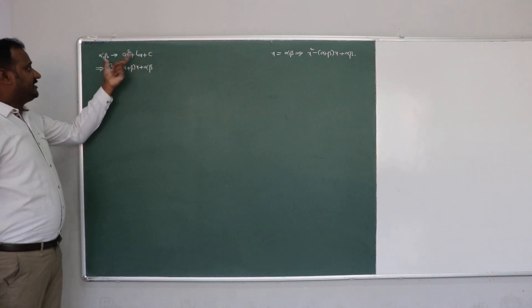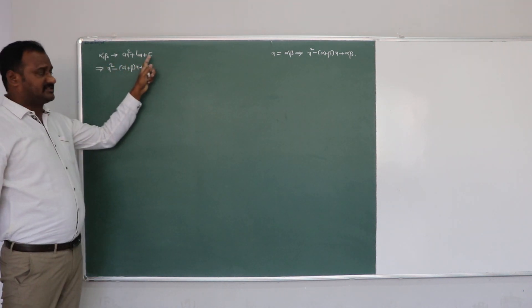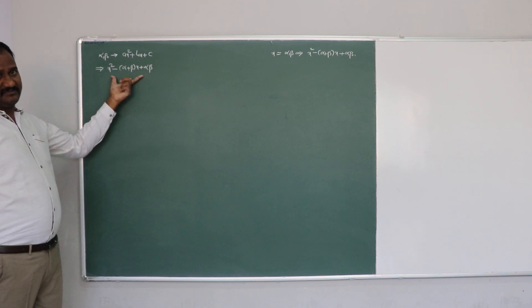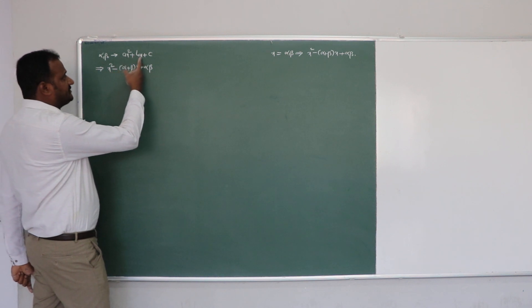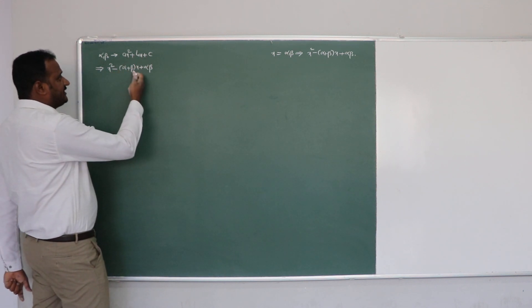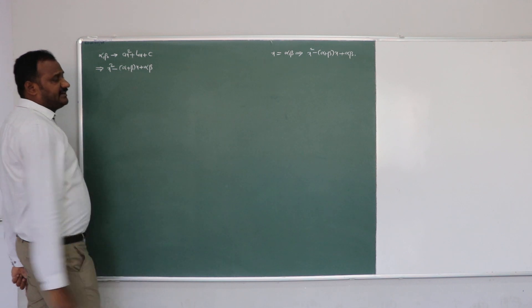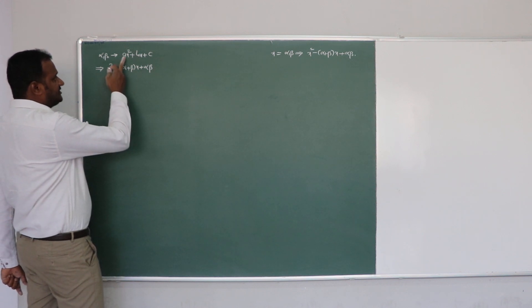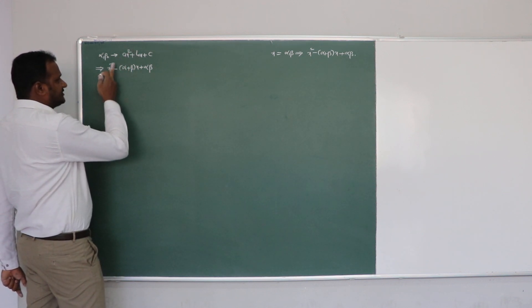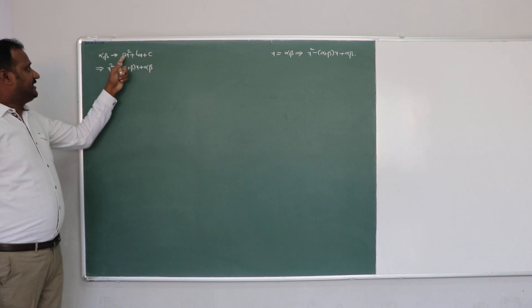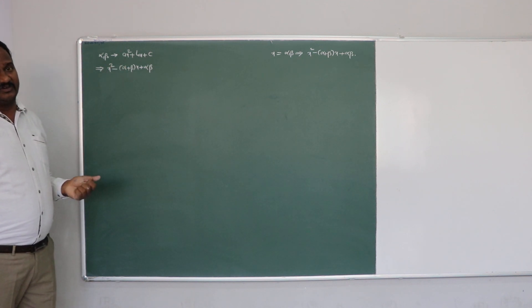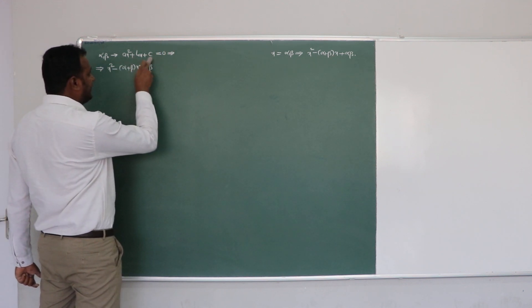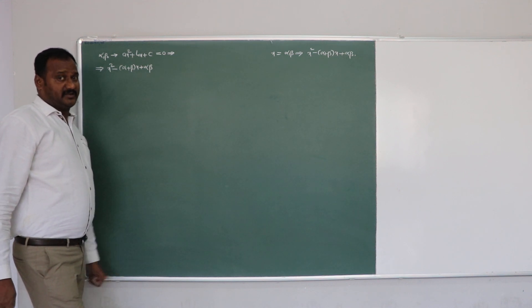I want to give you information that if alpha and beta are zeros of ax squared plus bx plus c, then x squared minus (alpha plus beta) into x plus alpha times beta is the same as ax squared plus bx plus c. But when you compare these two polynomials, here we have ax squared and here we have 1 times x squared, meaning a equals one here — but we cannot just assume a equals one.